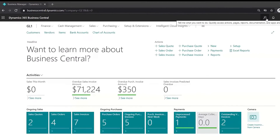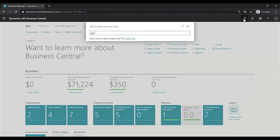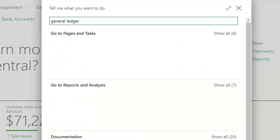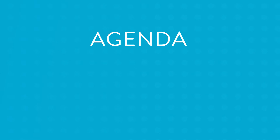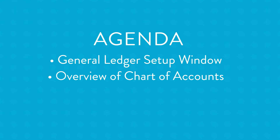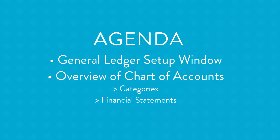We'll start by looking at the general ledger setup window and I'll point out the main areas you want to look at. We're not going to go through every setup option, but I want to highlight the ones you do want to set up to quickly get started with BC. Then after this I want to give you a quick overview of how the chart of accounts looks and how it works with the categories and the financial statements.